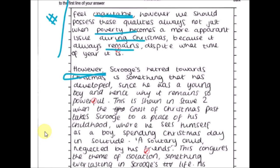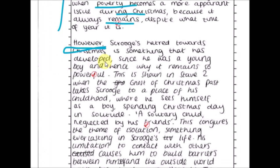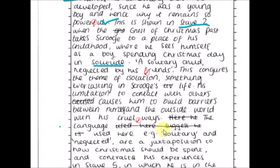Scrooge's hatred towards Christmas is something that has developed since he was a young boy, and hence why it remains so powerful. That's using stave two to understand why Scrooge ended up this way — psychoanalytically looking at how he got here. This is shown in stave two when the Ghost of Christmas Past takes Scrooge to his childhood, where he sees himself as a boy spending Christmas day in solitude: 'a solitary child neglected by his friends.' That quotation, remembered from memory, is a sign of genuine engagement and thorough understanding of the text.